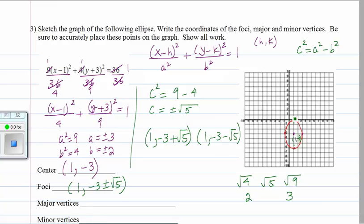The major vertices are these two, this one and this one. So that's at (1, 0) and (1, -6). The minor vertices are at (-1, -3) and (3, -3). They are these two.